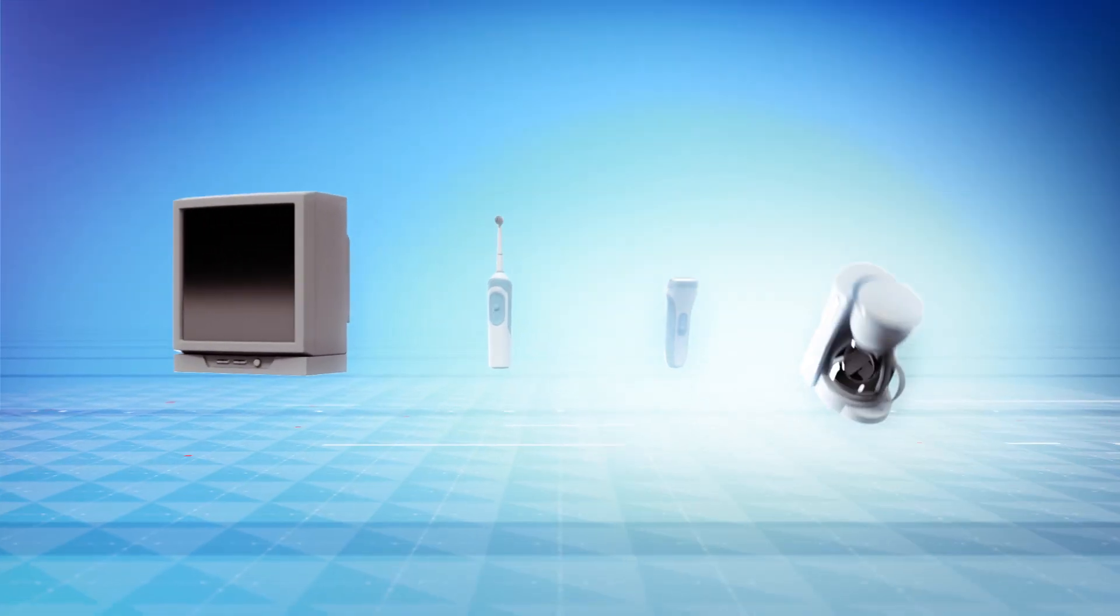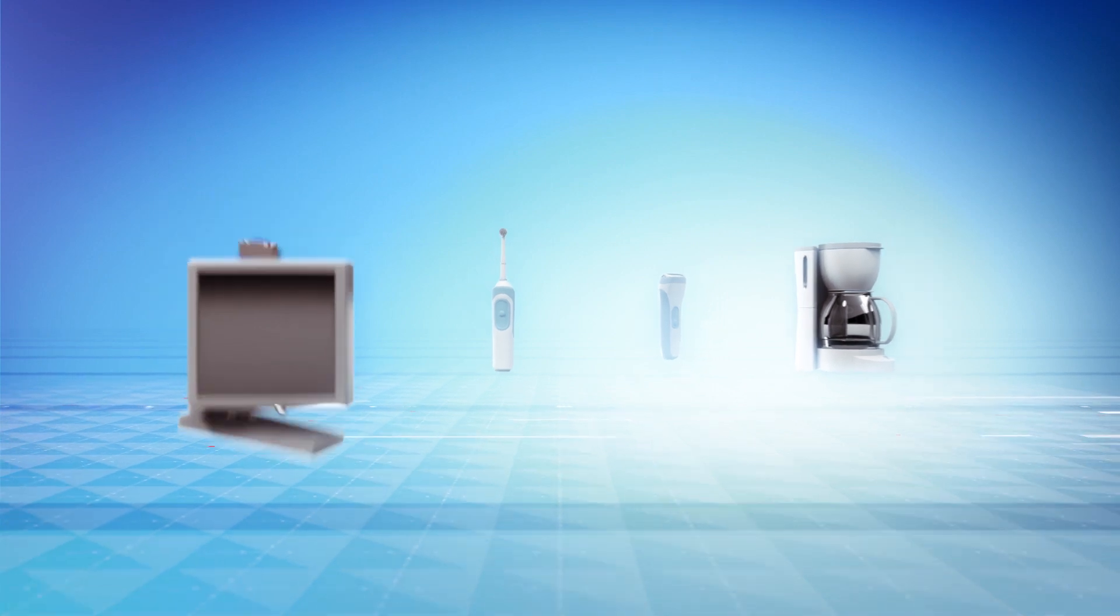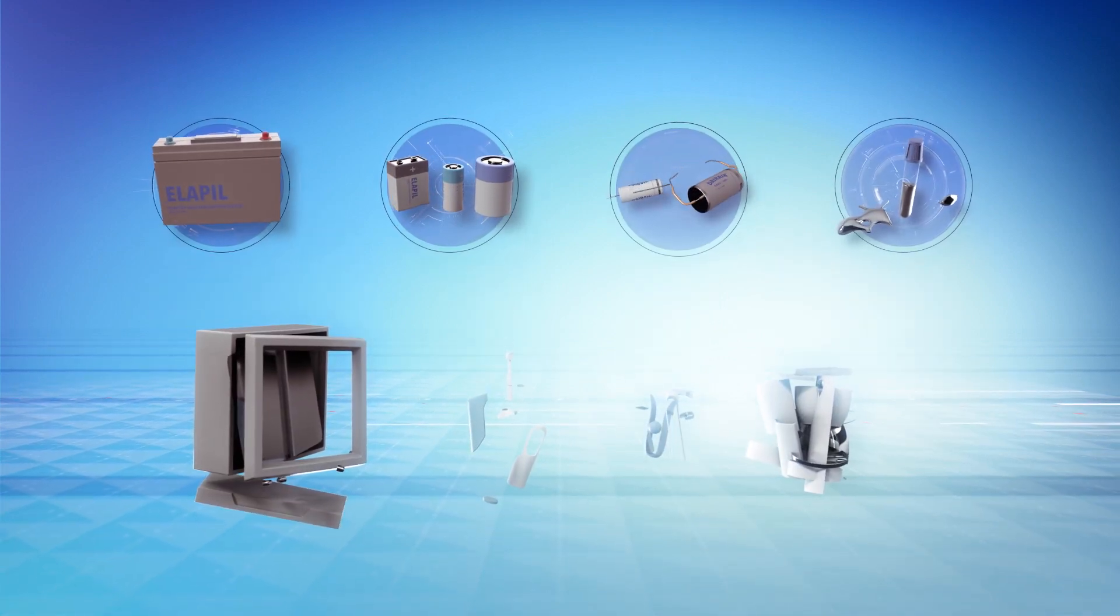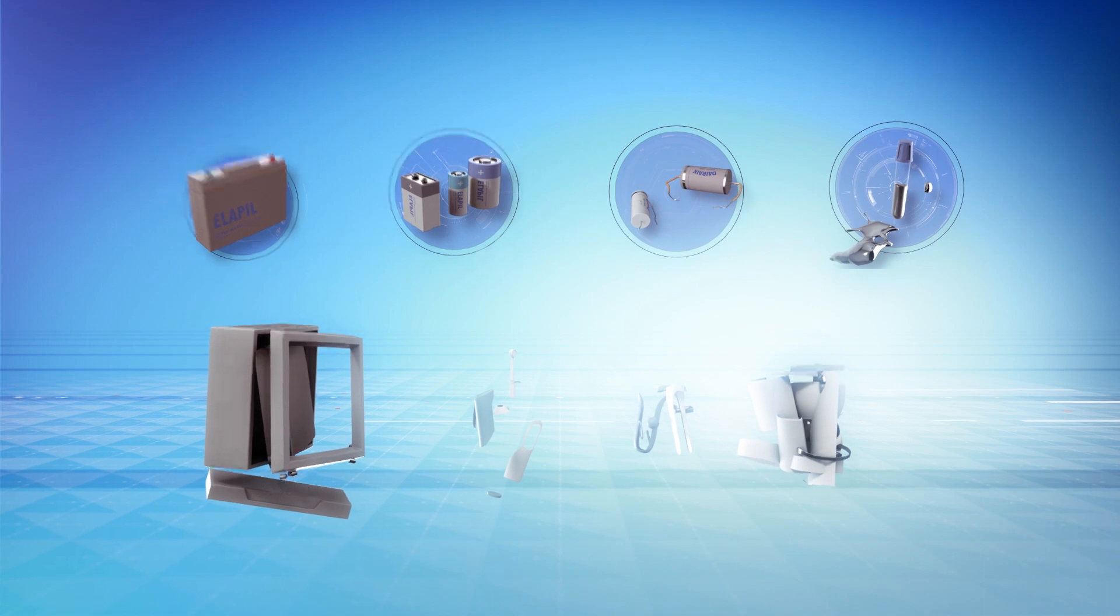Stena also recycles thousands of tons of electronics every year. First, we remove everything hazardous or toxic, such as batteries, PCBs and mercury.